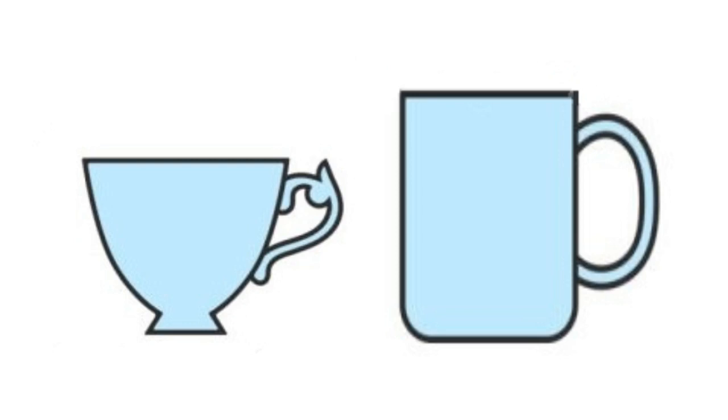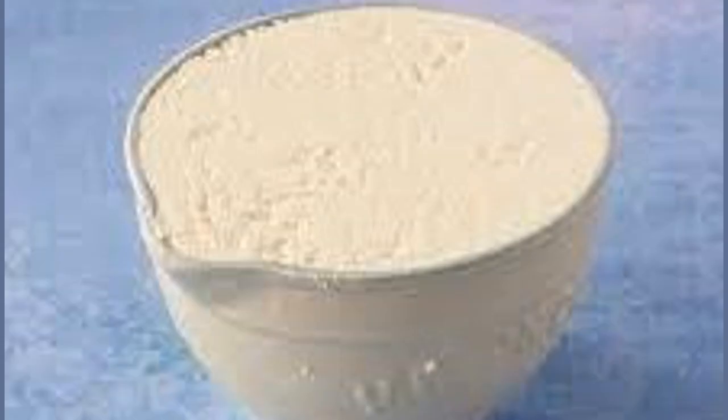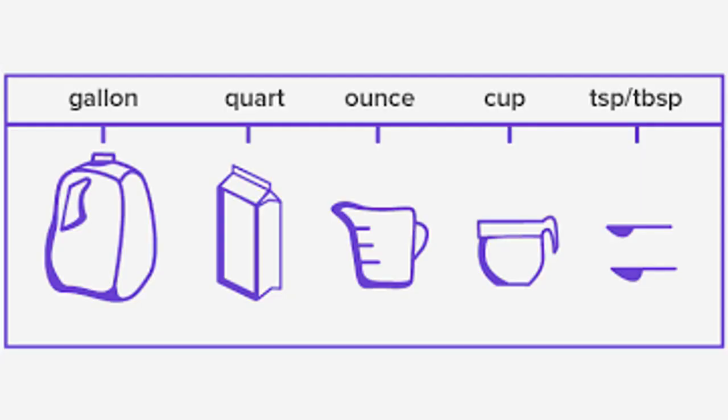A typical UK mug holds approximately 350 milliliters of liquid. Tip: if a recipe is all in cups — for example, two cups of flour, half a cup of sugar, and a cup of milk — you can use any standard cup size. For recipes with parts or various amounts of the same quantity, you can use one container to measure all your ingredients. You risk only a larger or smaller end result.